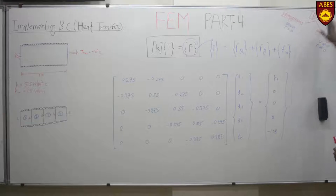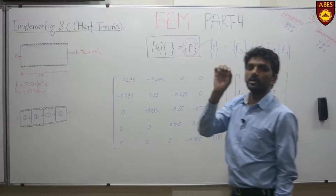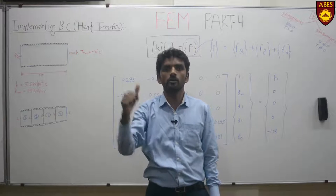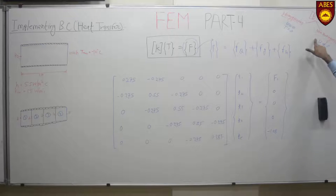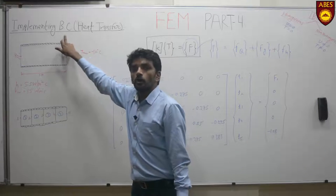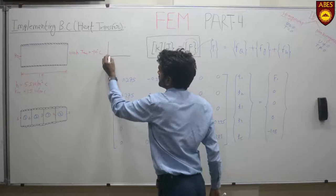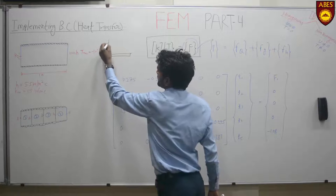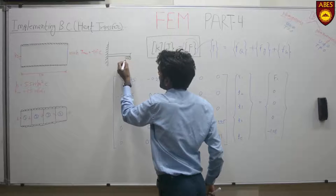There are basically two types of boundary conditions: one is homogeneous and one is non-homogeneous. Homogeneous boundary condition means that at a particular node, the value of displacement or temperature is 0. In the second case, the value of displacement or temperature is not 0. While applying the boundary condition for structural problems — structural problem means we were having a simple beam.